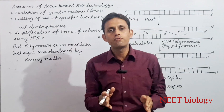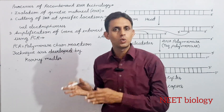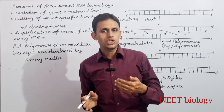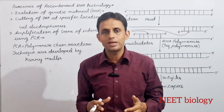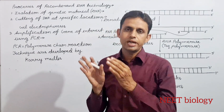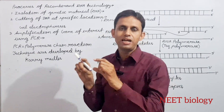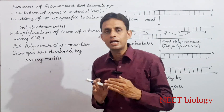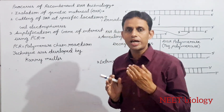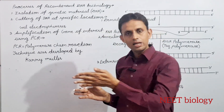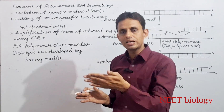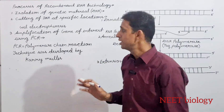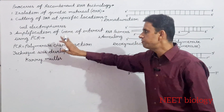Next step is cutting of DNA at specific locations. Culture के अंदर हम restriction endonuclease enzyme देंगे, जो कि DNA को उसके specific palindromic sequence से cut करता है। इसके बाद gel electrophoresis technique के द्वारा हम DNA के desired fragments को separate out कर लेंगे।